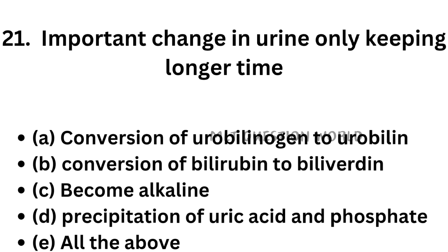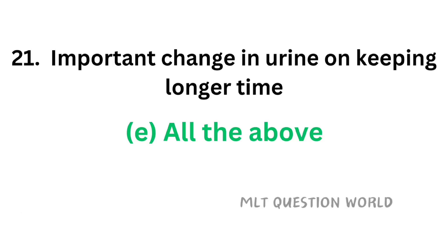Question number 21. Important changes in urine on keeping for longer time: option A, Conversion of urobilinogen to urobilin; option B, Conversion of bilirubin to biliverdin; option C, Becomes alkaline; option D, Precipitation of uric acid and phosphate; option E, All of the above. The correct answer is option E — all these changes will occur in urine on keeping for longer time.